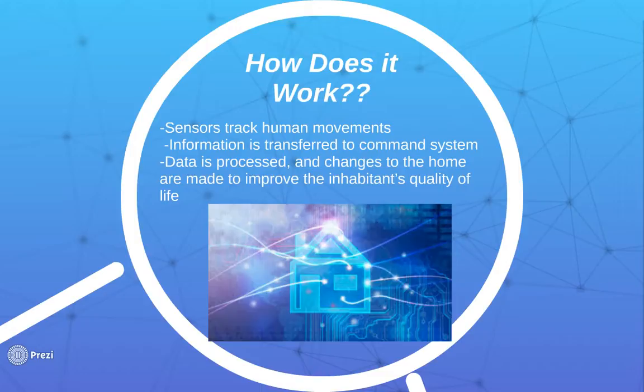One of the most important questions we explored was: how does a smart home work? In the most basic way, smart sensors around the house track human movements and habits — it can be daily routines or just one specific action. The information sensed by these sensors is then transferred, either via wires or wirelessly, though more often smart homes use wireless connections.